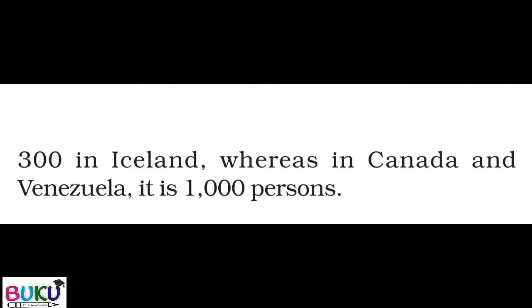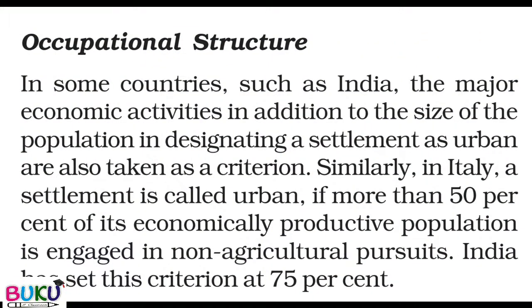Whereas in Canada and Venezuela, the threshold is 1,000 persons — Canada और Venezuela में 1000 persons per square kilometer को भी urban area की category में रखा गया है।